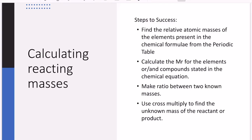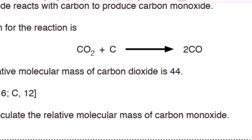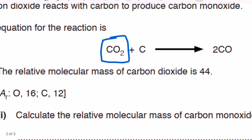Example one: the question states that carbon dioxide reacts with carbon to produce carbon monoxide. The equation is CO₂ + C → 2CO. Part A states that the relative molecular mass for carbon dioxide is 44, so the Mr of CO₂ is 44.